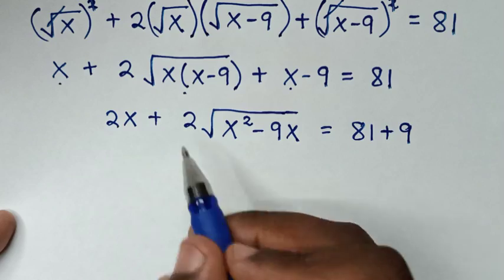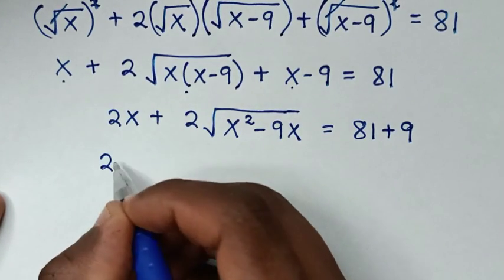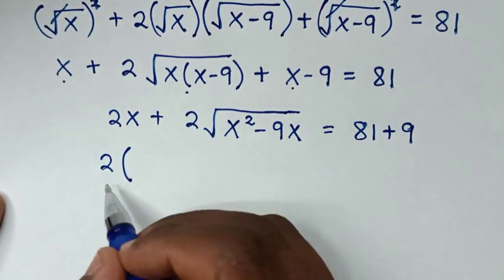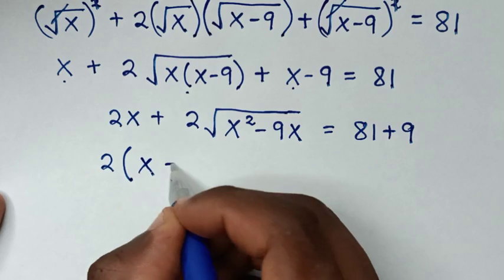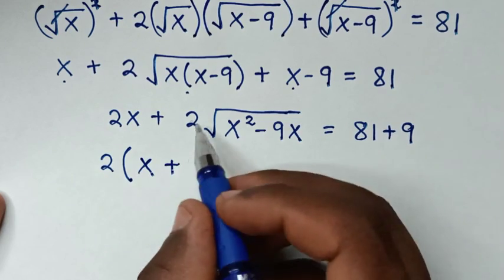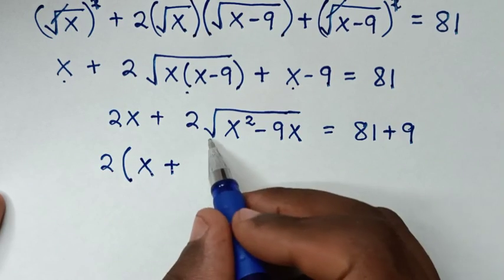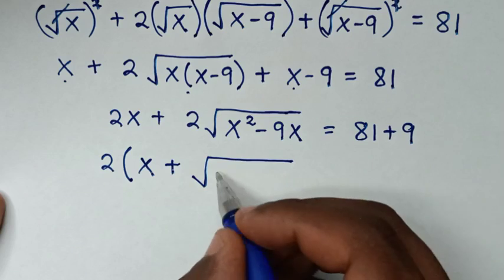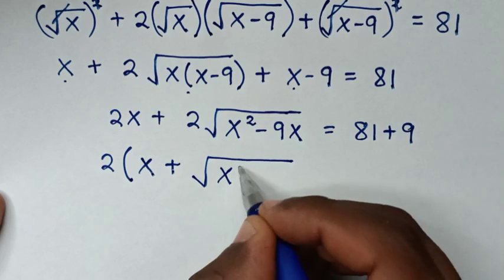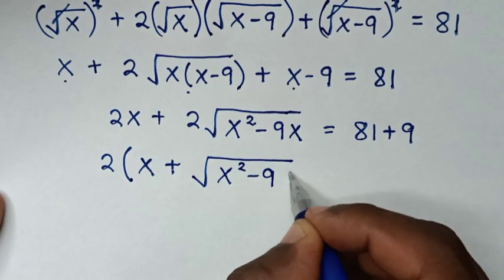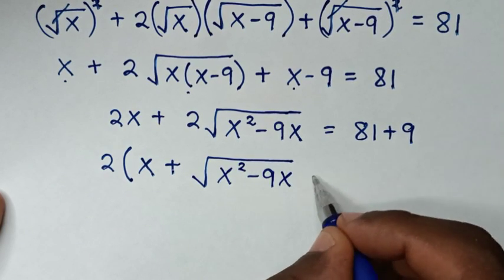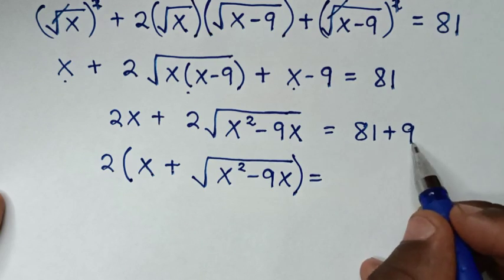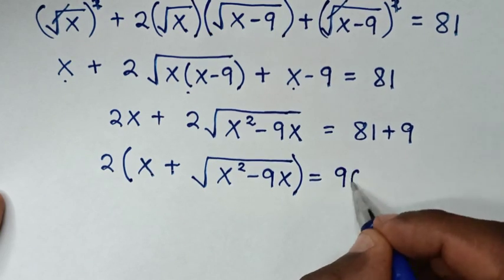Here 2 is common, so we take 2 out of the bracket. 2x divided by 2 is x, and we cancel the 2, leaving us with square root of x squared minus 9x, equal to 81 plus 9, which is 90.